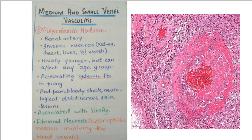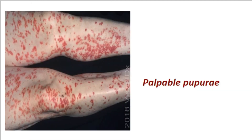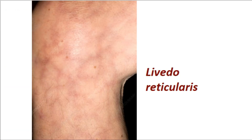Regarding clinical features, patients typically present with non-specific symptoms like fever, myalgia, arthralgia, and weight loss. Since it is a multi-system disease, it can manifest with multi-system involvement. Skin lesions are common; the most common include palpable purpura, ulcerations, infarctions, and livedo reticularis. Palpable purpuras are raised, non-blanching hemorrhages visible on the skin.